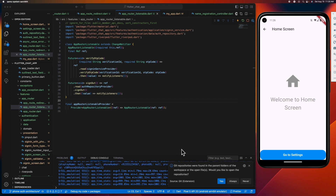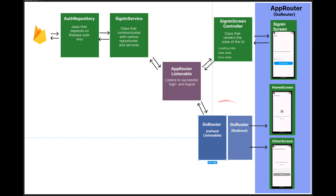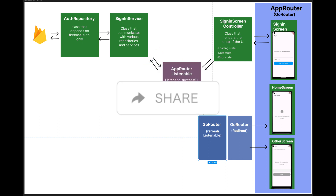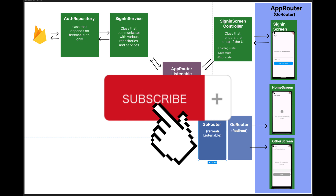That's it for this video, guys. We've successfully implemented GoRouter's redirect feature in our Flutter application. This not only simplifies our navigation logic but also makes our code cleaner and easier to manage. With this setup, we can now gracefully handle user authentication and direct our users to the appropriate screens based on their auth status and additional conditions such as the presence of a display name — it's a powerful tool that can significantly enhance the user experience in your Flutter apps. Thank you so much for tuning in. If this video helped you out, please give it a big thumbs up, share it with your fellow Flutter enthusiasts, and don't forget to hit the subscribe button for more awesome content.